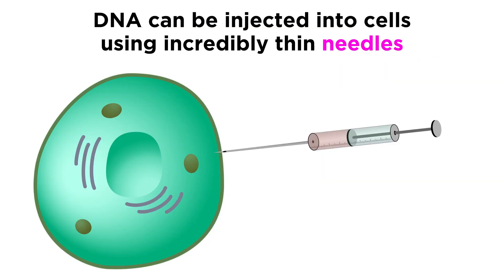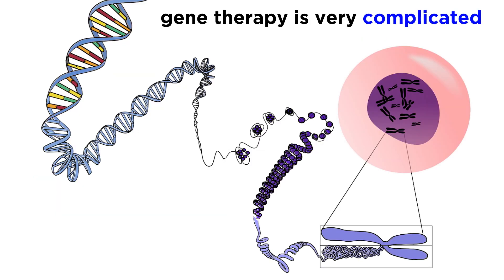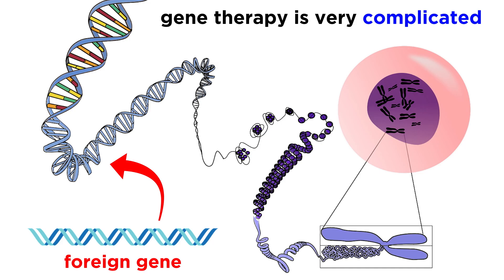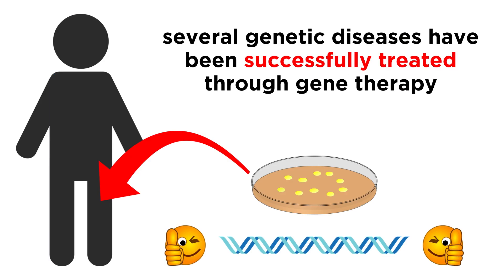DNA can even be injected into cells with incredibly thin needles. There have been some complications with gene therapy, largely due to the uncertainty associated with where the insertion of the retroviral vector will occur on the genome. It is also difficult to control the manner in which this new gene is expressed. However, there is still cause for cautious optimism, as a number of very serious genetic diseases have been treated with significant success, and this is an area of ongoing study.